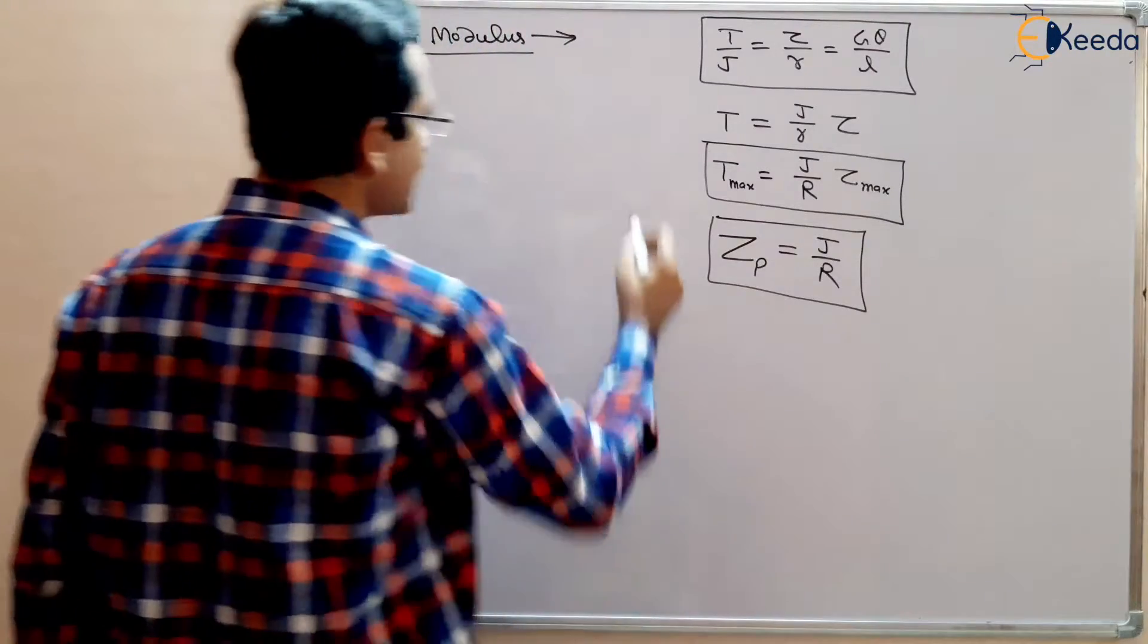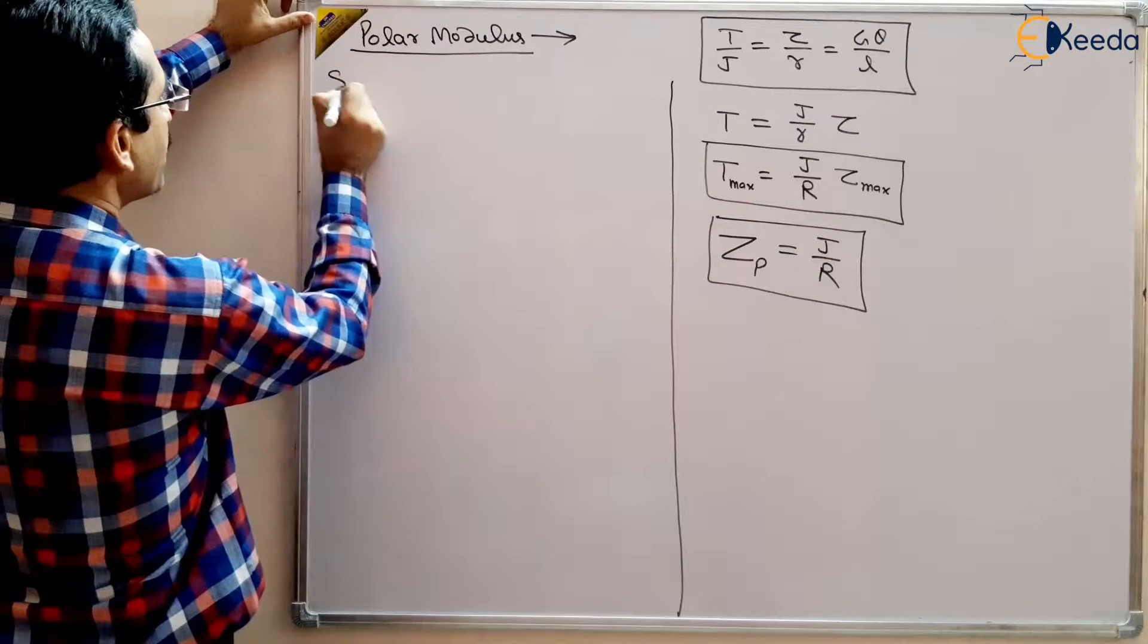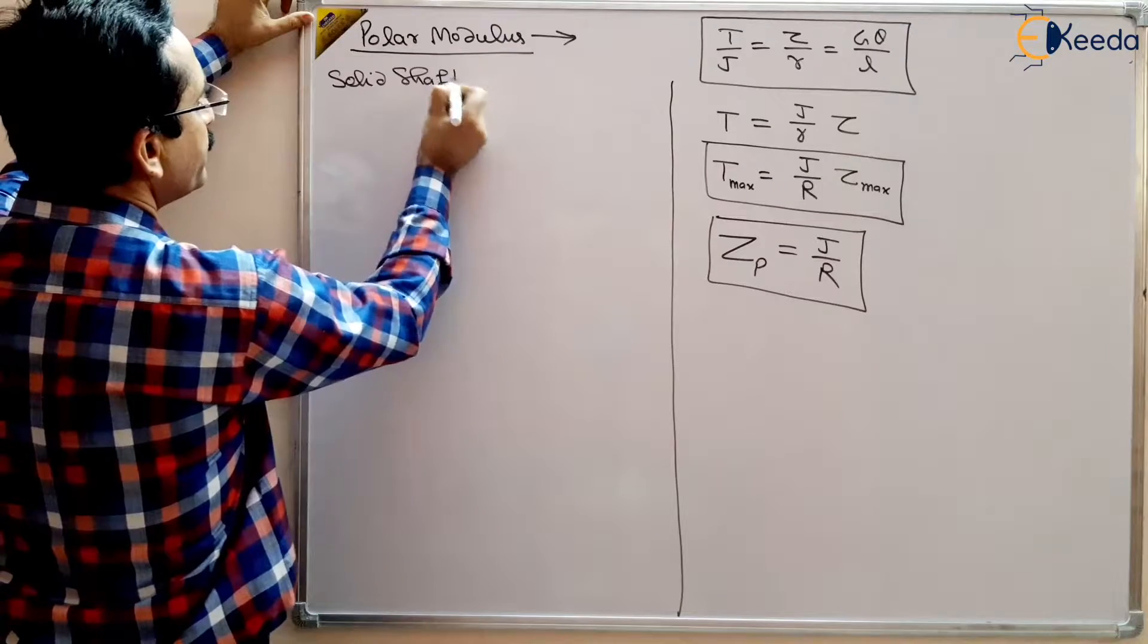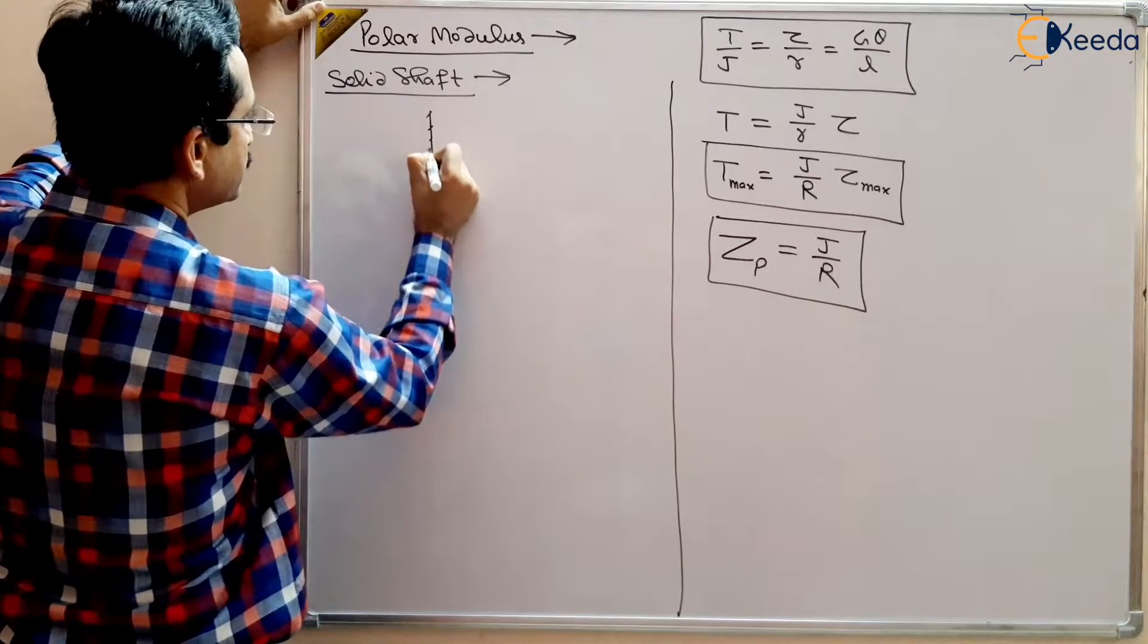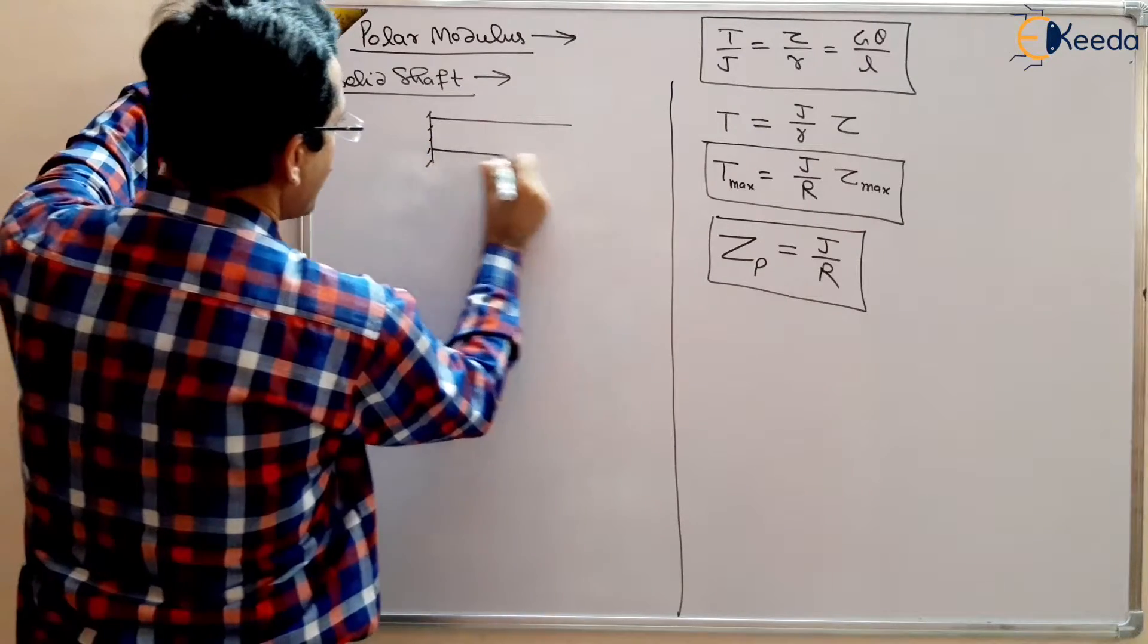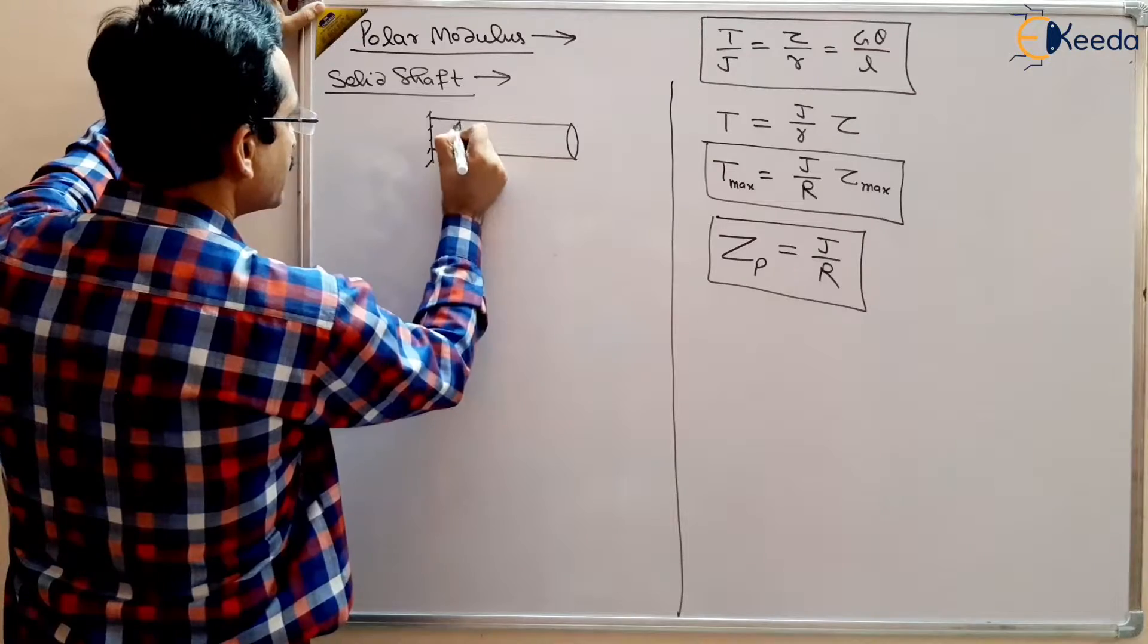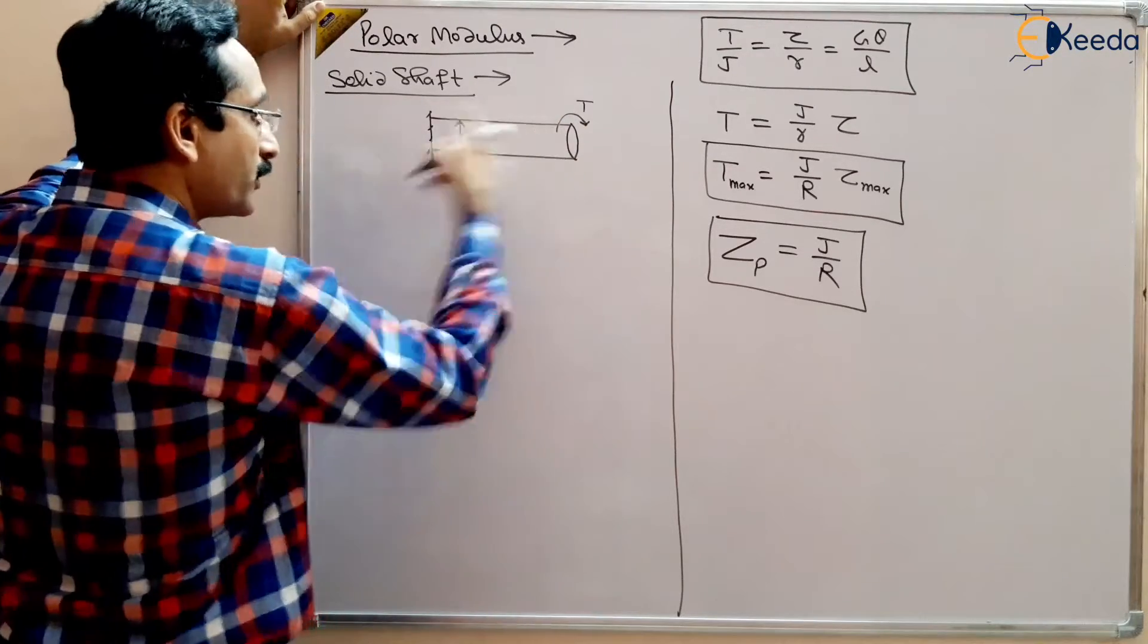So if it is a solid shaft, suppose we are studying a solid shaft, if it is a solid shaft like this, which has certain dia D and a torque is applied. So what is the Polar Modulus for this shaft?